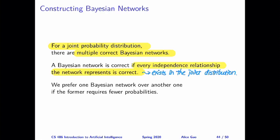Since there are multiple correct Bayesian networks for a particular scenario, we have to choose among them and see which one is better. It turns out that we often prefer a Bayesian network that requires fewer probabilities. In general, the number of probabilities required is correlated with the number of directed edges we have — so the fewer edges, the better. The reason for preferring fewer probabilities is that it results in a smaller, more compact Bayesian network that is easier to work with.